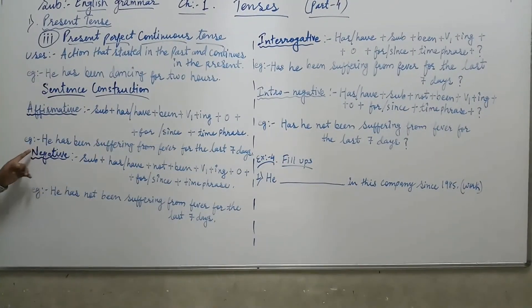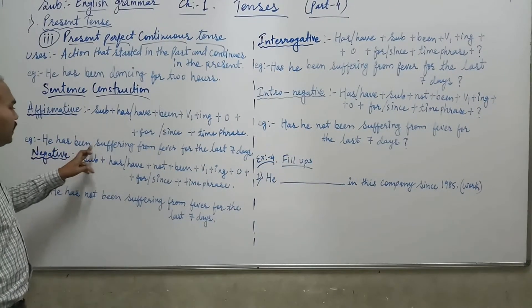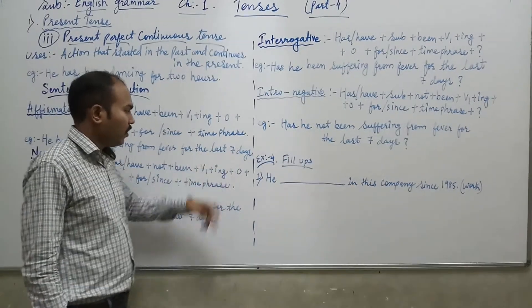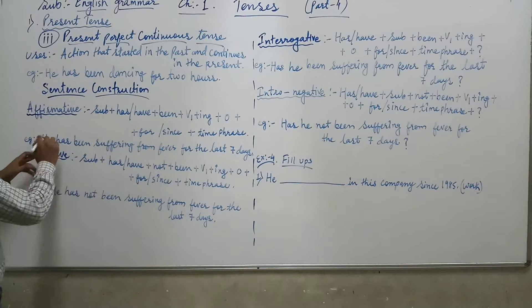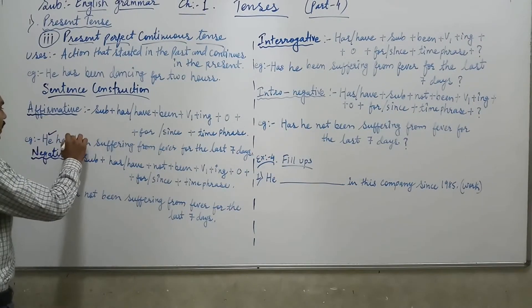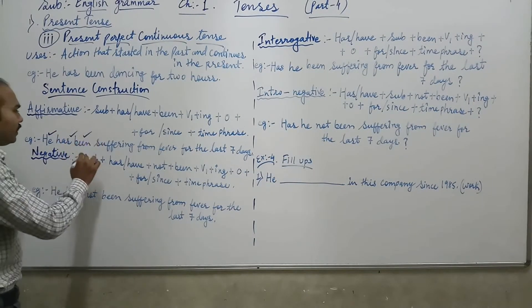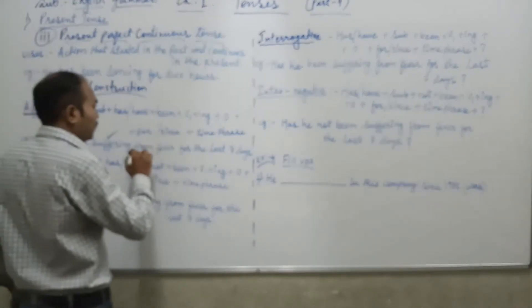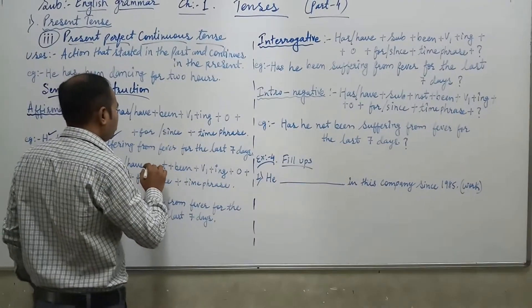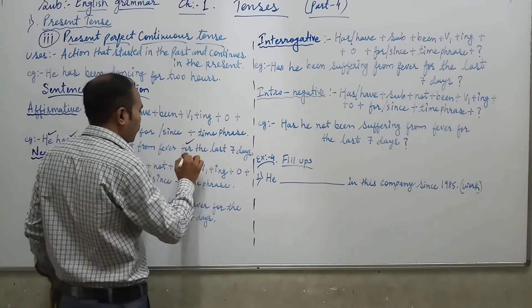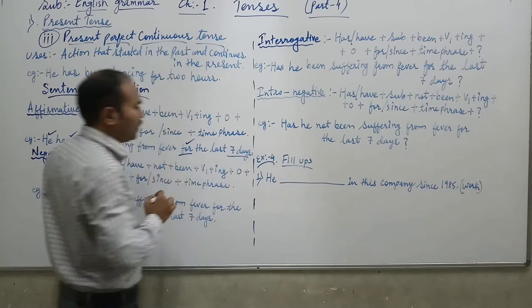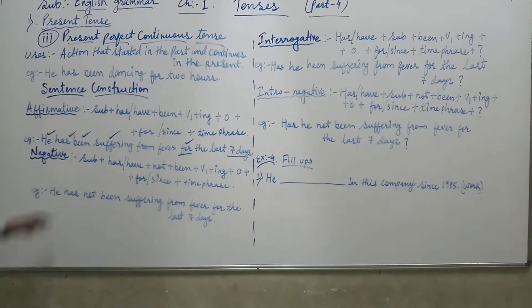Now let us see the example. He has been suffering from fever for the last seven days. So subject aage pehle aata hai, has/have, then been, then V1 ING form is suffering, then the other words, and for. For yahan use ki gaya hai or time phrase bhi likha hai, seven days. In this way we have to form affirmative sentence in present perfect continuous tense.